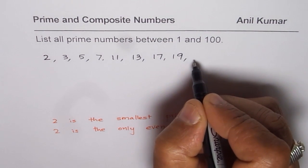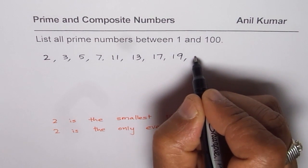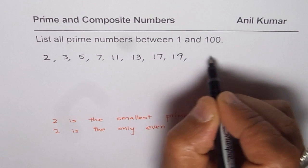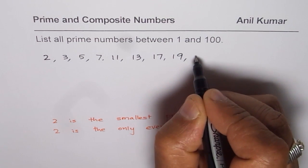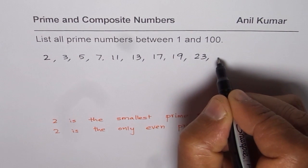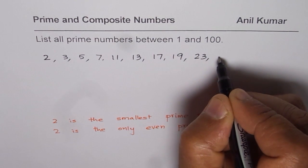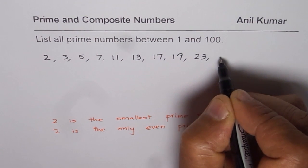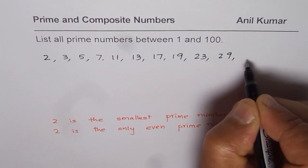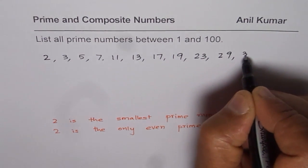So 21, 22 - skip all the even numbers. 23 is a prime number. 24 skip. 25 can be divided by 5. 26 is even. 27 is 3 times 9. 28 is even. 29 is a prime number. 31 is a prime number. 32 is even. 33 can be divided by 3, 3 times 11. 35 is divisible by 5. 36 is even. 37 is a prime number.